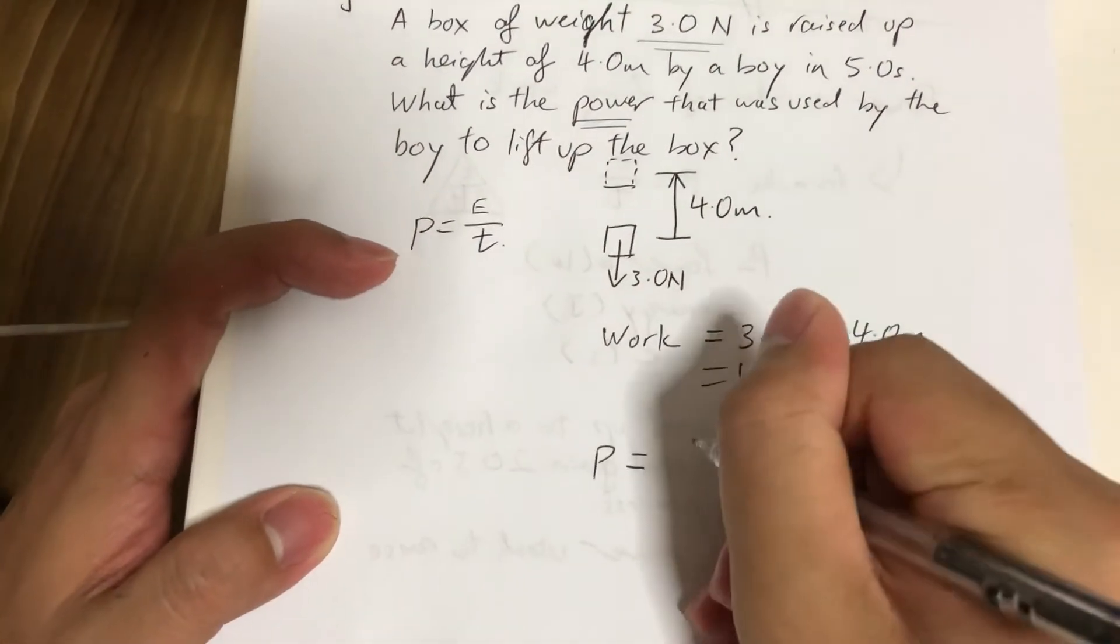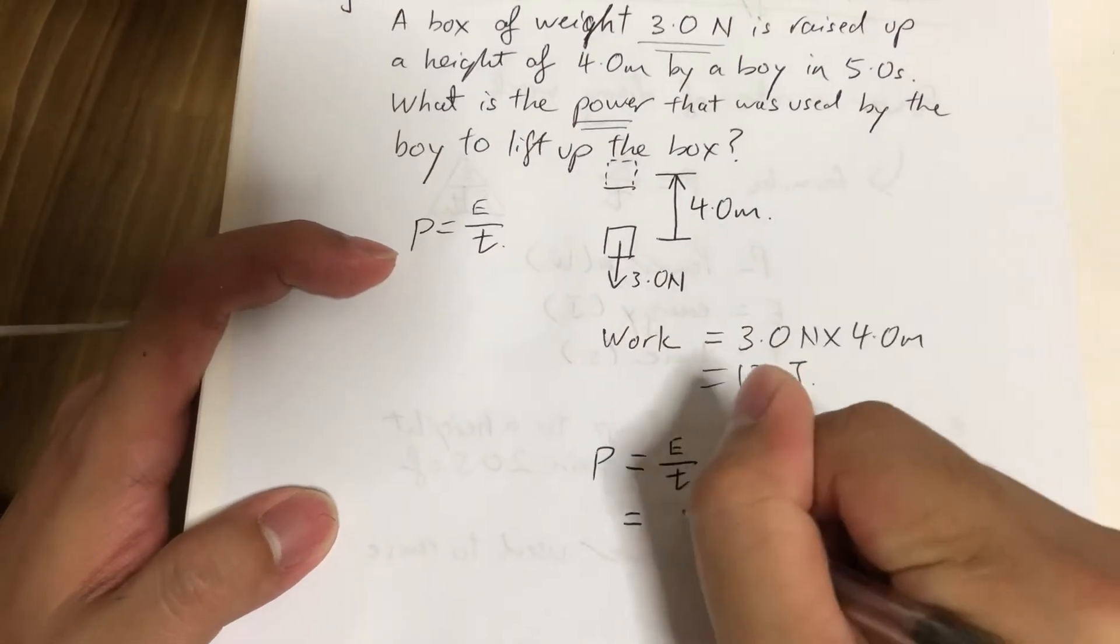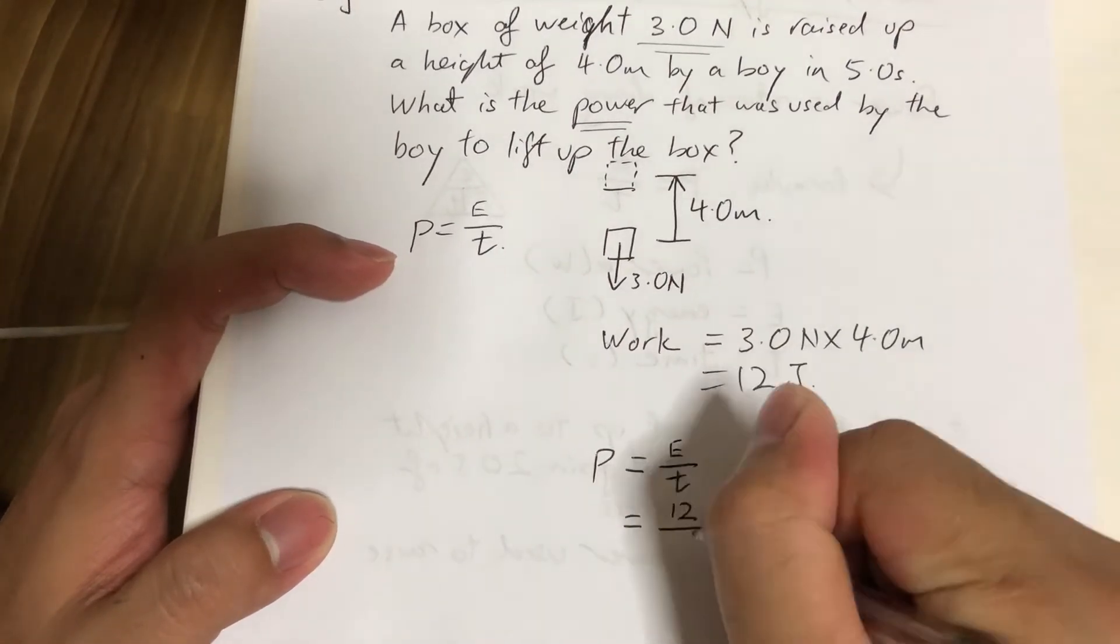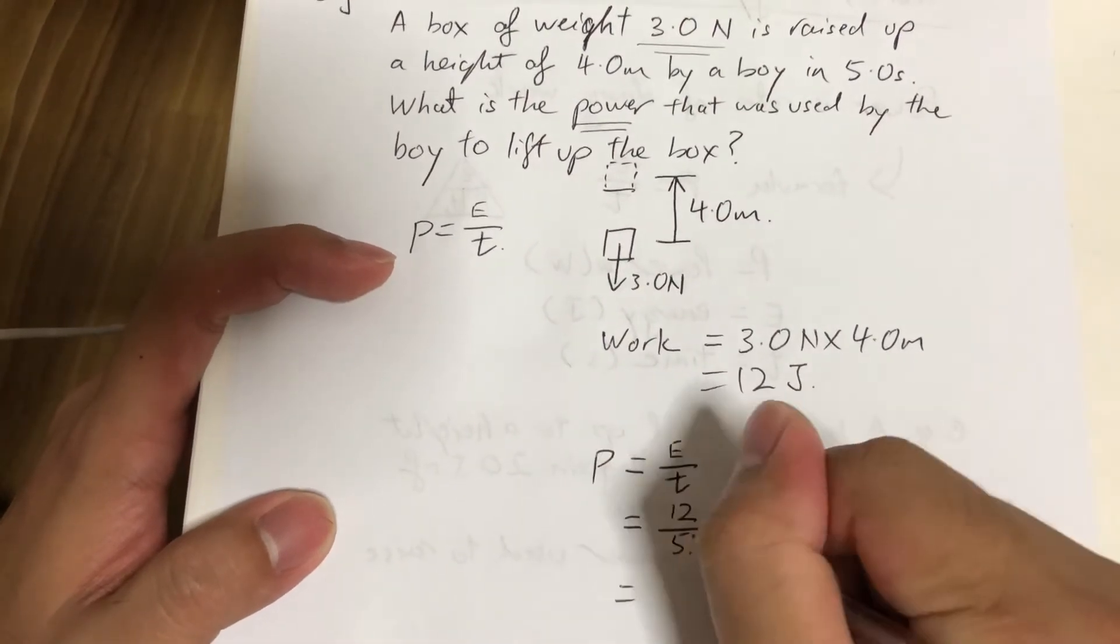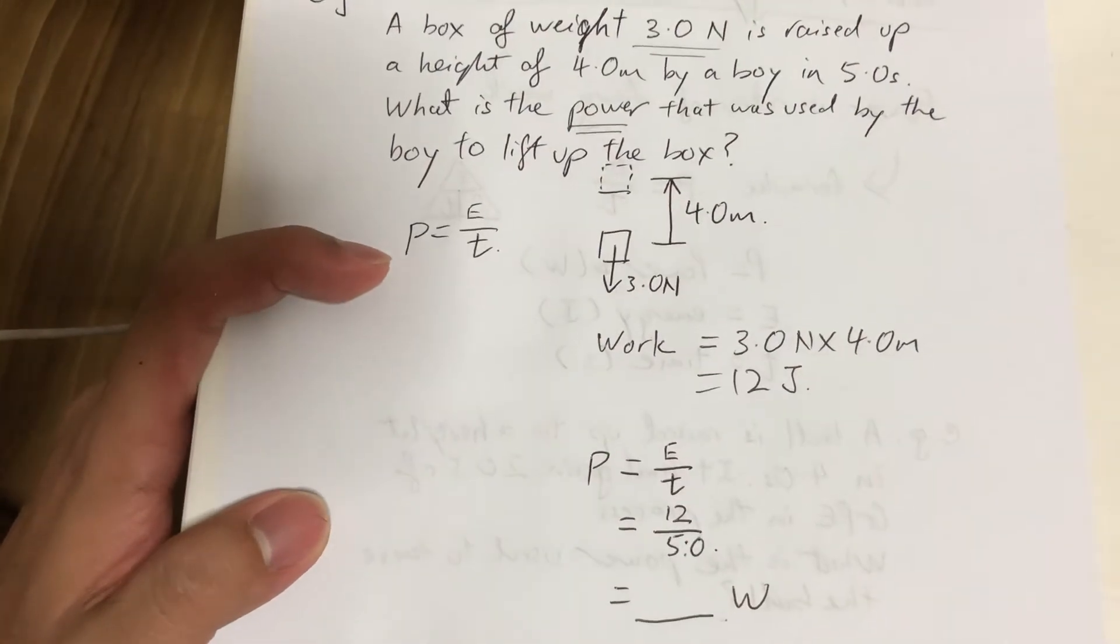So power is actually equal to energy divided by time, and that will mean 12 divided by 5. And this will give me the answer in watts.